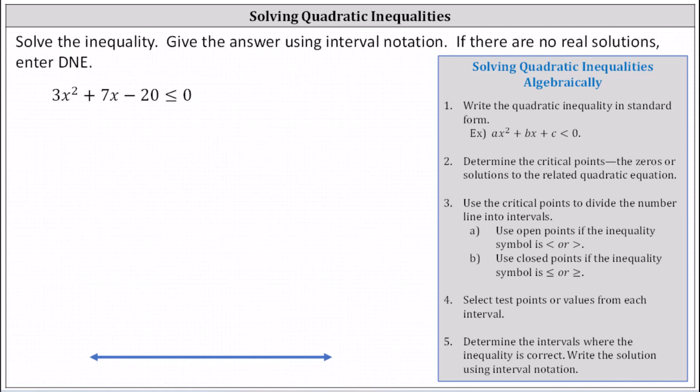We want to solve the quadratic inequality 3x² + 7x − 20 ≤ 0. Step one, we want to make sure the quadratic inequality is in standard form, which we can see it is.